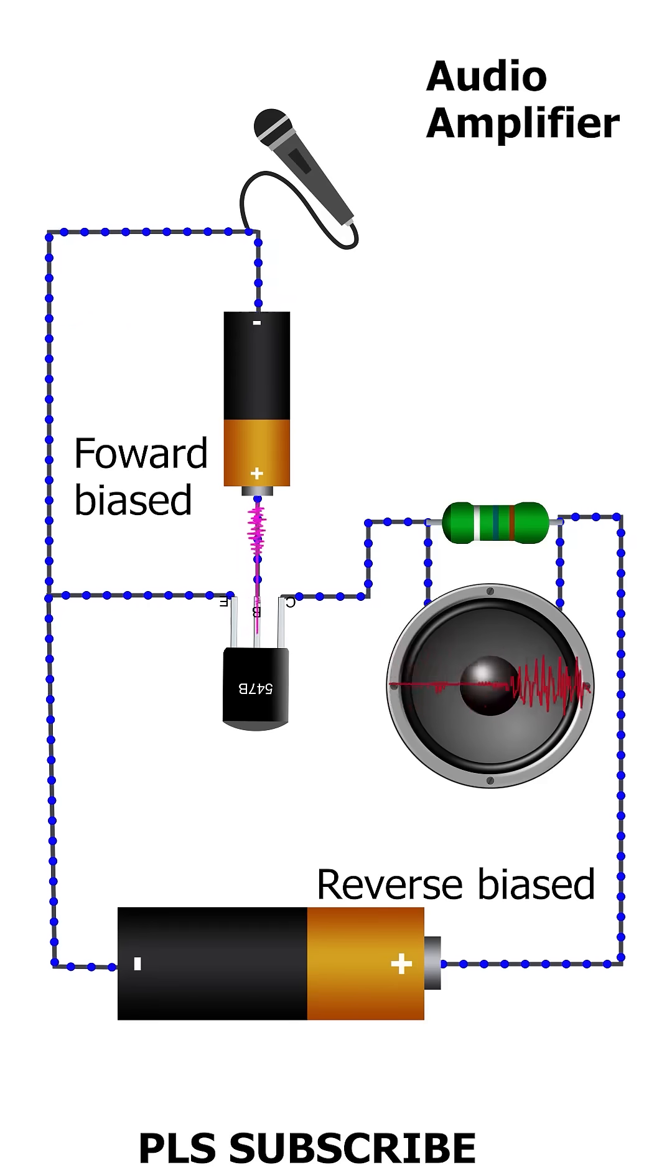The amplified output signal appears across the collector-emitter junction. This output signal is essentially a larger and amplified version of the input signal.